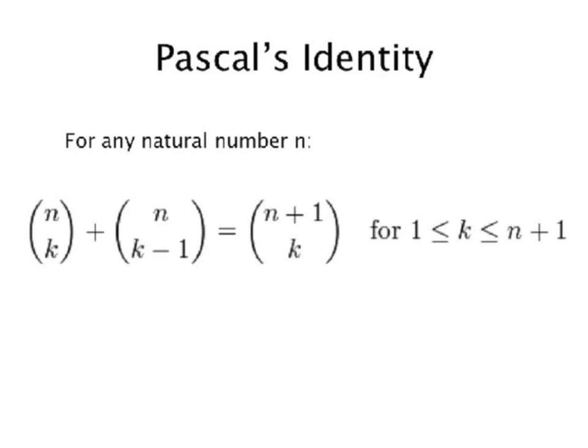Pascal's Identity is a theorem in discrete mathematics. As you can see here, it states that n choose k plus the quantity n choose k minus 1 is equal to n plus 1 choose k, in which k is less than n plus 1 and both those numbers are greater than 1.